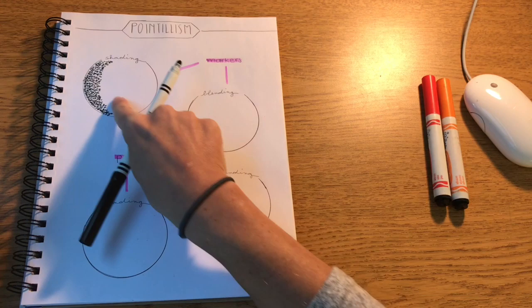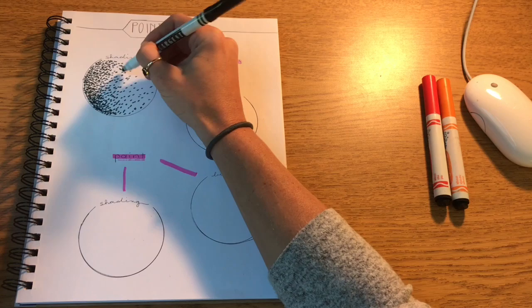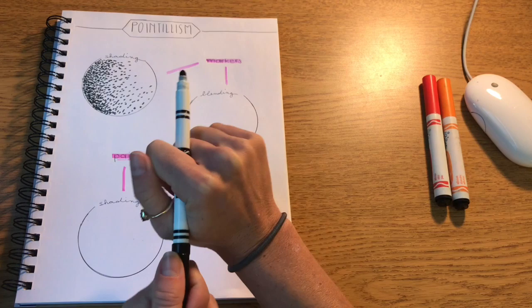Okay, so now I'm getting closer to the center, so I'm slowly going to add less dots and they're just gonna be a little further apart. And then here I'm going to leave it white because that will be my lightest value. So that's shading with pointillism.